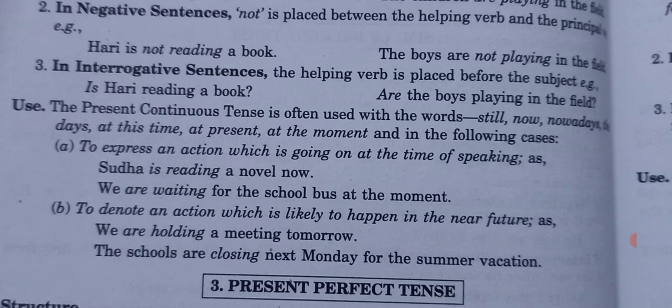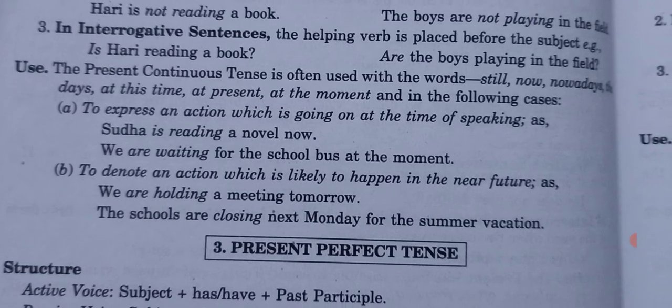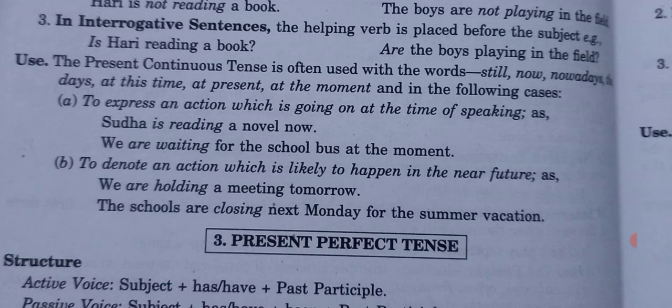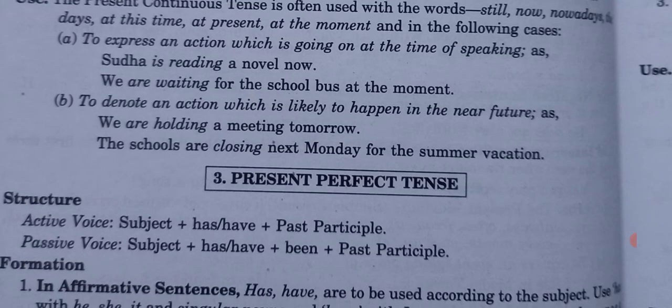Present continuous tense is often used with words like still, now, nowadays, at this time, at present, at the moment. Use it: (1) to express an action going on at the time of speaking — 'She is reading a novel now'; 'We are waiting for the school bus at the moment.' (2) To denote an action likely to happen in the near future — 'We are holding a meeting tomorrow'; 'The schools are closing next Monday for the summer vacation.'